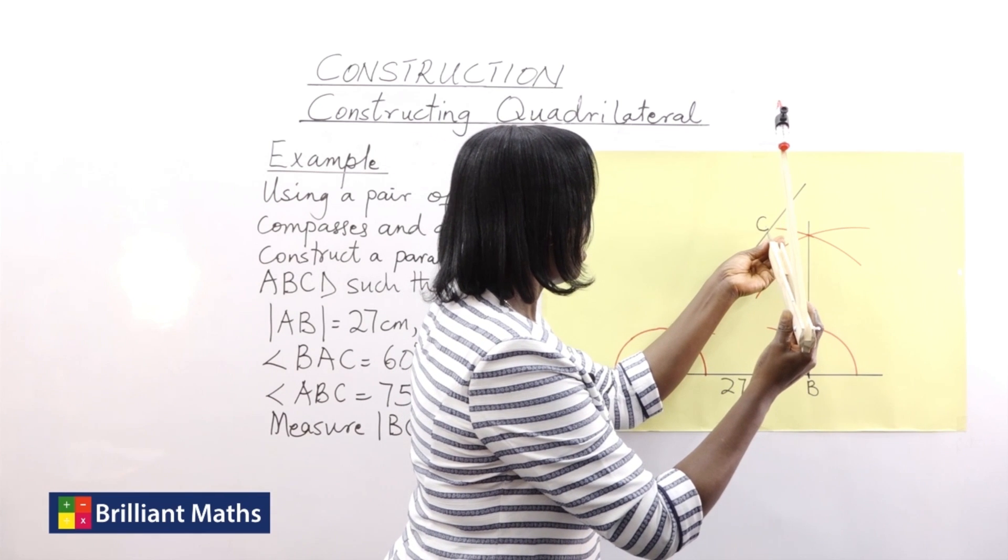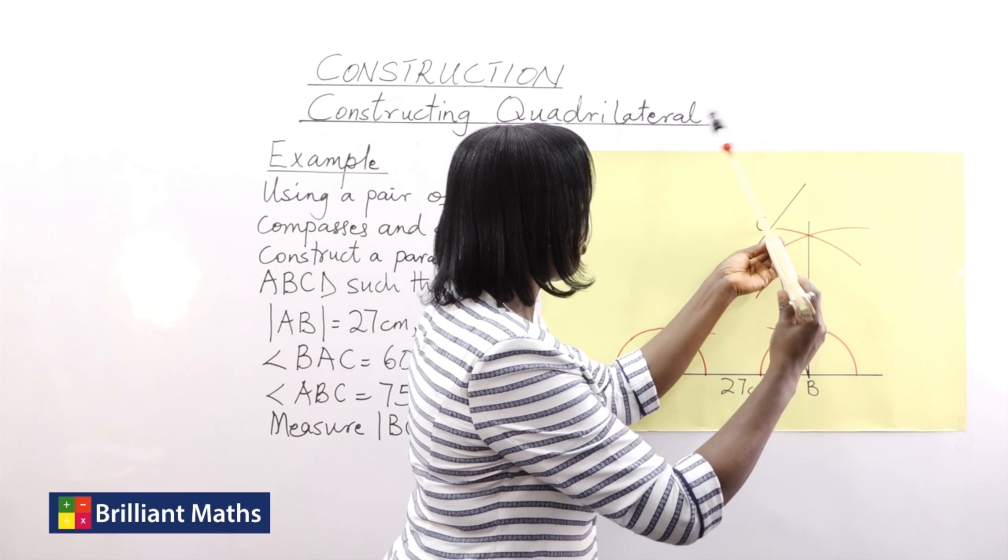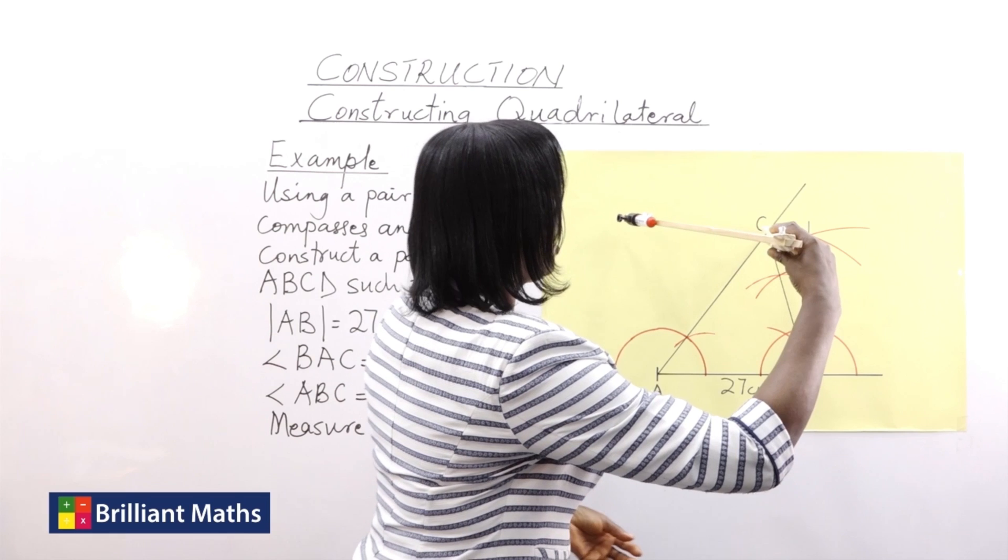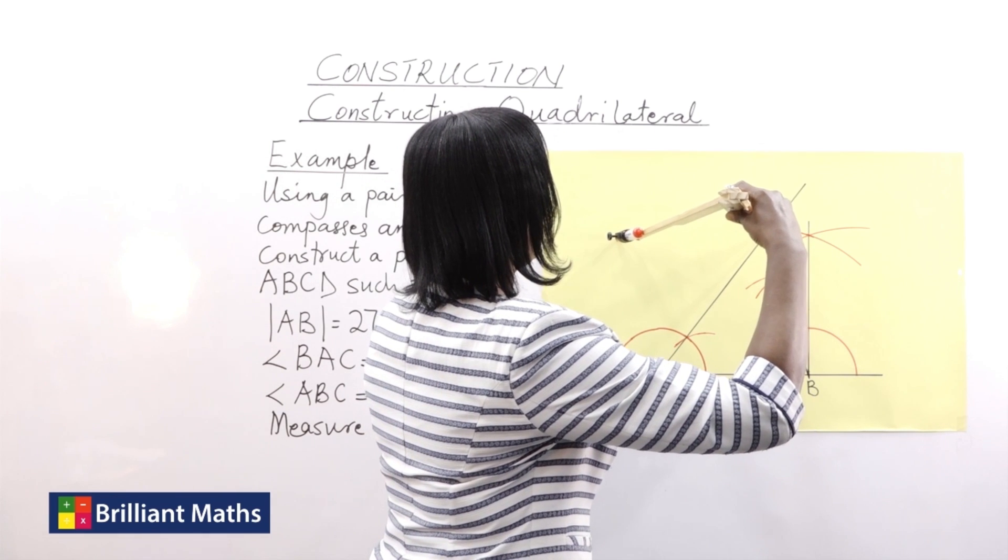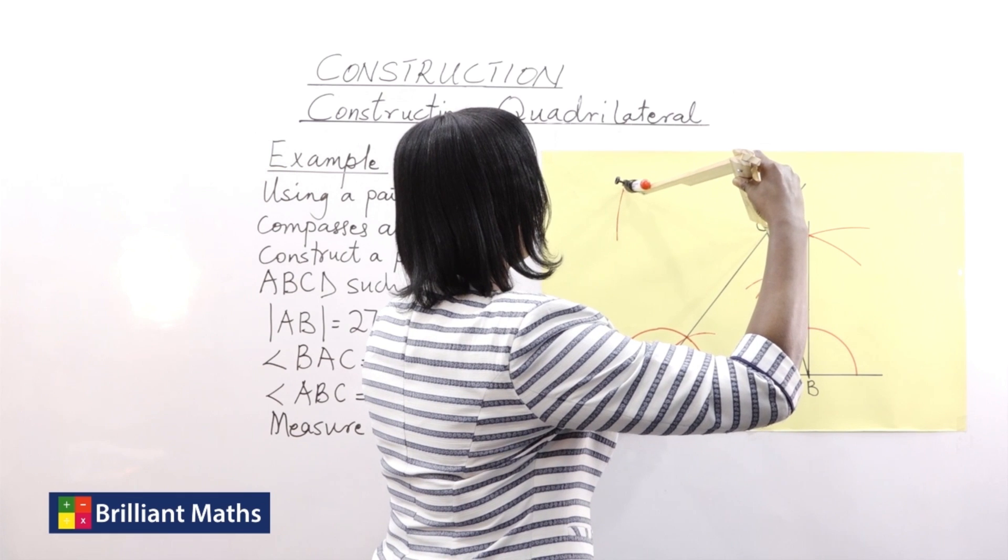So that's 27 centimeters. I place it at C. That's the point where the 75 degrees meets with the 60 degrees. Then I strike an arc.